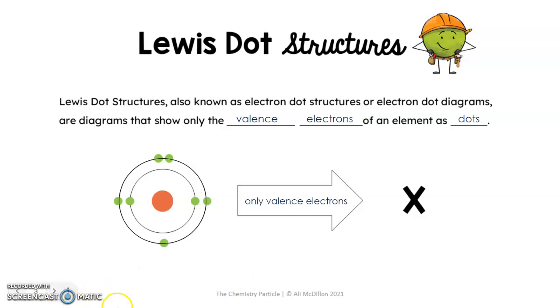These are diagrams that only show the valence electron of an element as dots. Essentially what valence electrons are, they're just the electrons that are in the outermost energy shell. For example, this element right here has 1, 2, 3, 4, 5, 6, 7 total electrons. We know that from the Bohr diagram that we see here.